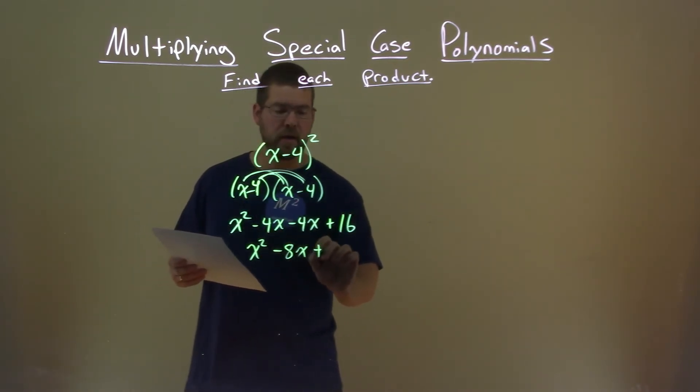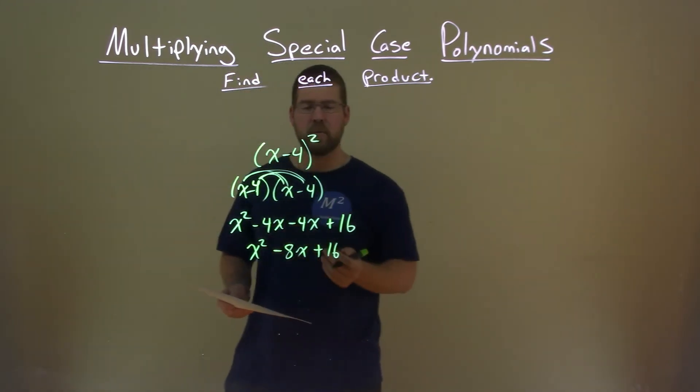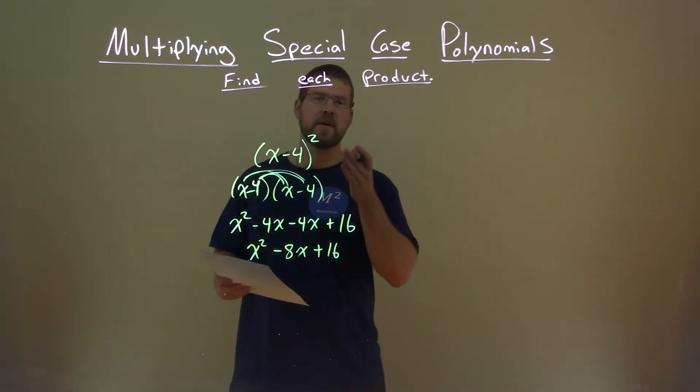We add them together, bring down the rest, and we get our final answer: x squared minus 8x plus 16.